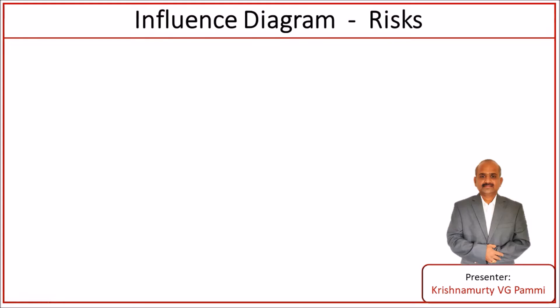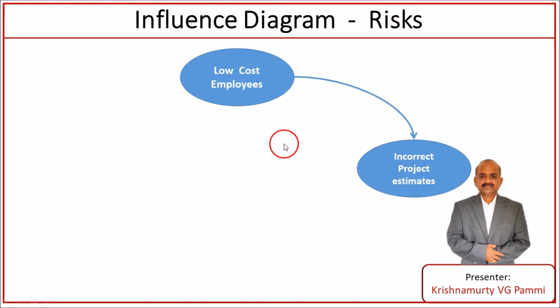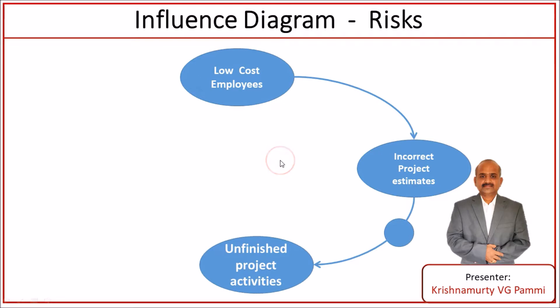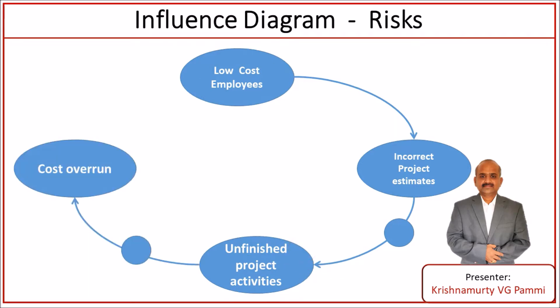Let us take another example of an influence diagram relating to risks. Whenever we want to start any engagement, we have a mix of skilled persons and low-skilled persons. Most of the time, management wants to maximize the percentage of less-skilled persons because they come at low cost. The moment you have more low-cost employees, they tend to provide incorrect project estimates because they are not rightly skilled, and you may end up with unfinished project activities.